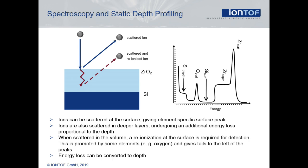The energy after leaving the solid is given by two components. Firstly, the energy loss characteristic for the atom that caused the scattering event, and secondly, the energy loss for moving the primary ion through the solid, which is proportional to the depth of the scattering event. That means that an ion scattered below the surface is registered with an energy smaller than an ion scattered from an atom of the same element at the surface.